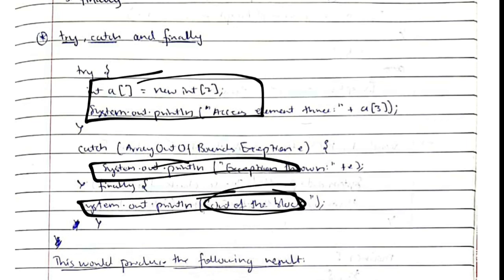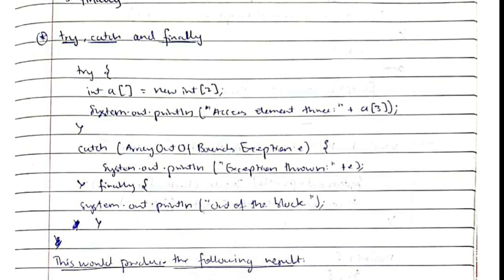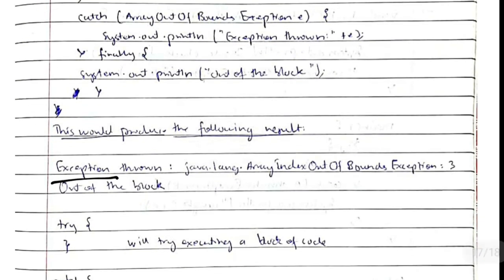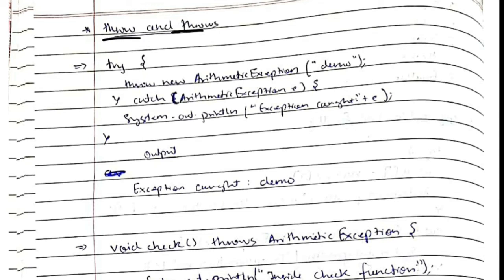Here is an example: the try block, catch block, and finally block are shown. Whatever is in the finally block will always be printed, with or without an error. Inside the try block, an array of size 2 is declared — meaning valid indices are 0, 1, 2 — and we try to access element at index 3, which is invalid. This error gets caught in the catch block, which prints 'exception thrown' along with the location and type of exception. The finally block then prints 'out of the block'.